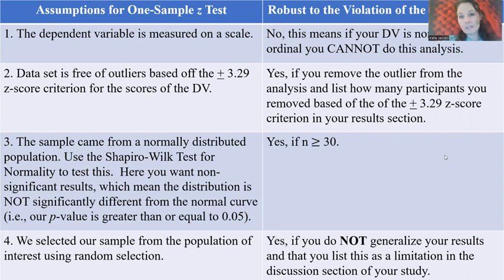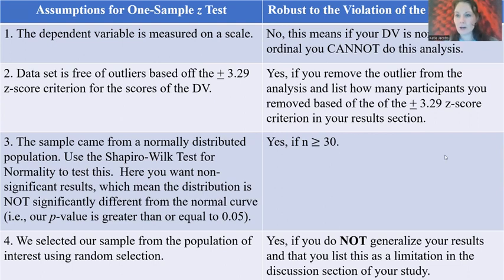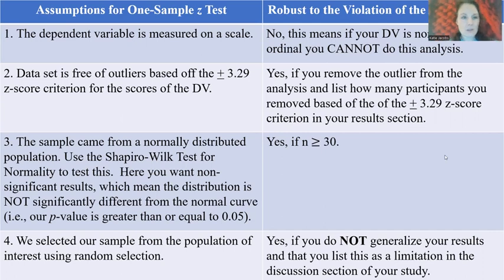However, if you violate the outlier assumption, move to the robust column. If you remove the outliers, you can still run the analysis. Then check the next assumption: the sample came from a normally distributed population. We use the Shapiro-Wilk test for normality. If our p-value is greater than or equal to 0.05 for the Shapiro-Wilk test, we're good to move on. If it's less than 0.05, we check the robust column to see if our sample size is 30 or larger.